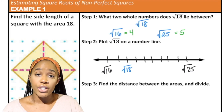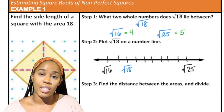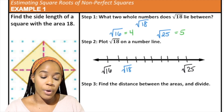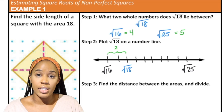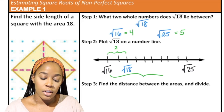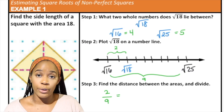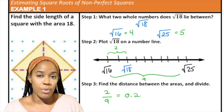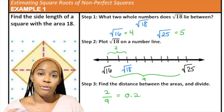For step 3 we need to find the distance between our areas and then divide. I'm going to use my number line to demonstrate that. To get from radical 16 to radical 18 we're going up two units, and the entire distance between radical 16 and radical 25 is 9 units. So I found the distance between my two areas, which is 2 over 9. If I plug this into the calculator and do 2 divided by 9 I get 0.2 — I'm rounding to the tenth because we're estimating to the nearest tenth.